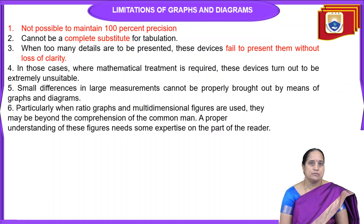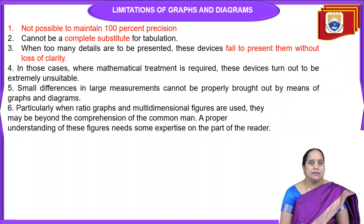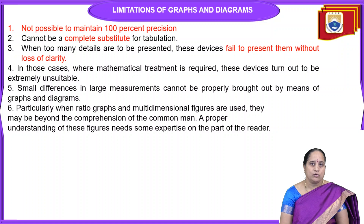There are certain limitations. The first limitation is that it is not possible to maintain 100% precision, whereas in the case of numerical data presented in the form of tables, we can maintain 100% precision. Graphs and diagrams cannot be a complete substitute for tabulation. Tables are used for mathematical treatment, whereas graphs and diagrams cannot be used for further algebraic treatment. When too many details are to be presented, these devices fail to present them without a loss of clarity.